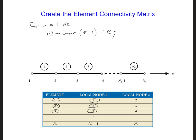And the second node of the element is the same as the element number plus 1. So element connectivity e, 2 is e plus 1. And then we can end our for loop.